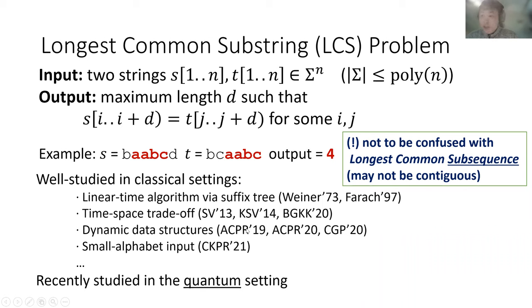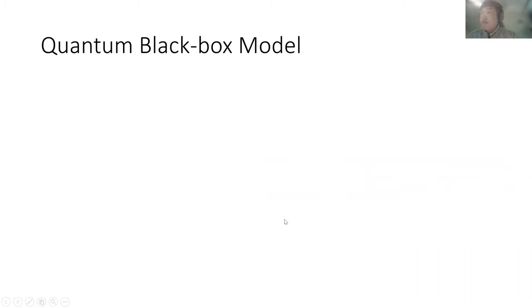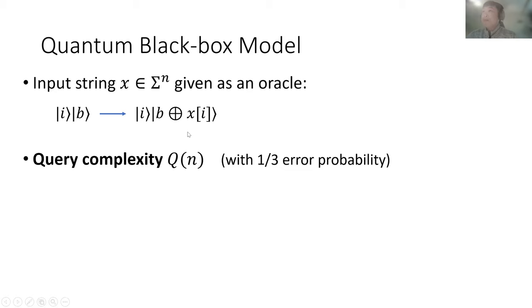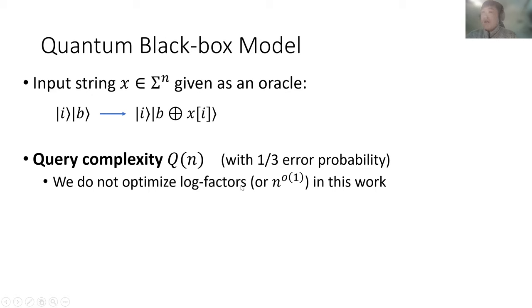More recently, this problem was studied in the quantum setting. We use the standard quantum black box model. The input strings X are given as a quantum oracle — we give an index I to the oracle and get back the I-th character in the input string, done in quantum superposition. We care about query complexity of a quantum query algorithm with bounded error probability. In this work, we do not optimize log factors or some polynomial factors in the query complexity.